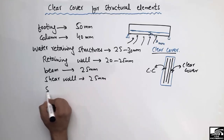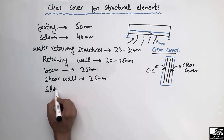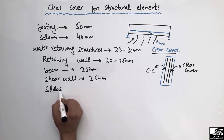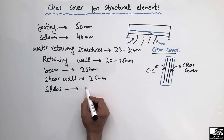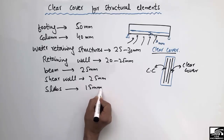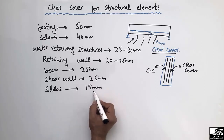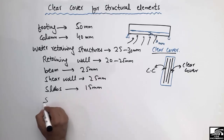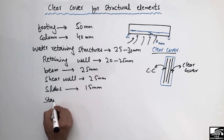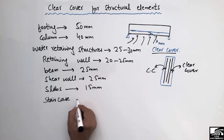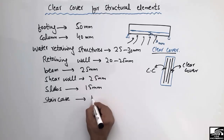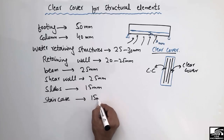For slabs, the clear cover is usually 15 millimeters, which is the least value among all structural elements. For staircases, this value is also 15 millimeters.